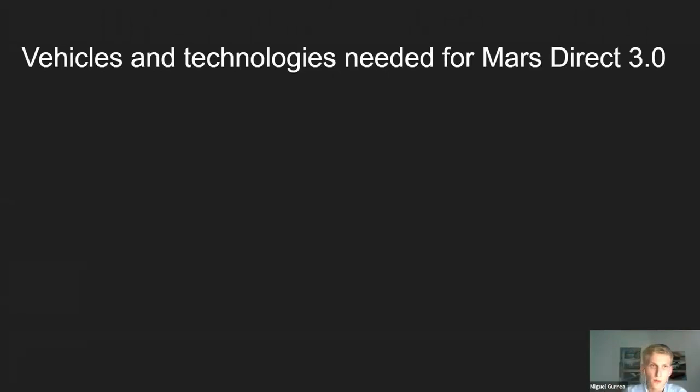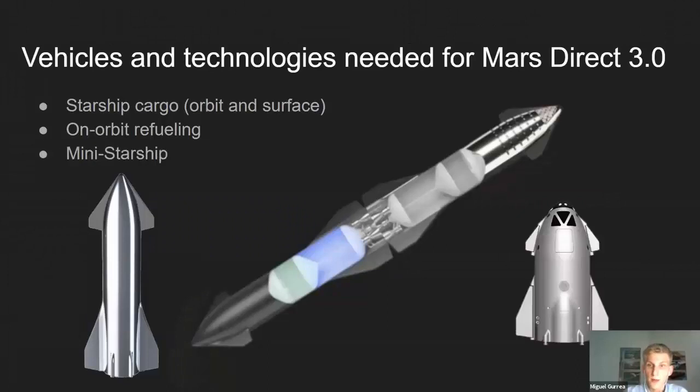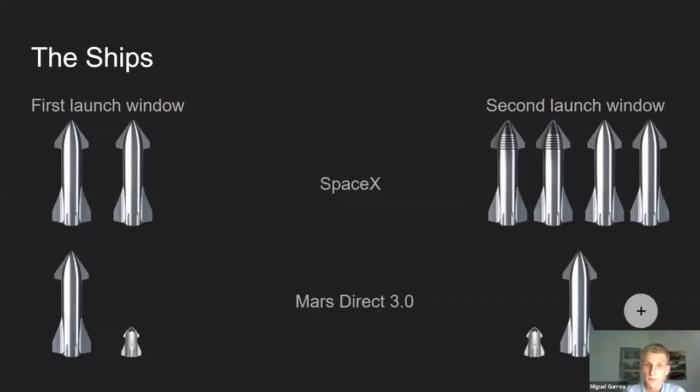The vehicles and technologies needed for Mars Direct 3.0 are: the Starship cargo for orbit and surface, on-orbit refueling for getting to trans-lunar injection, and the mini Starship that needs to be developed. Let's compare SpaceX's plan to Mars Direct 3.0.